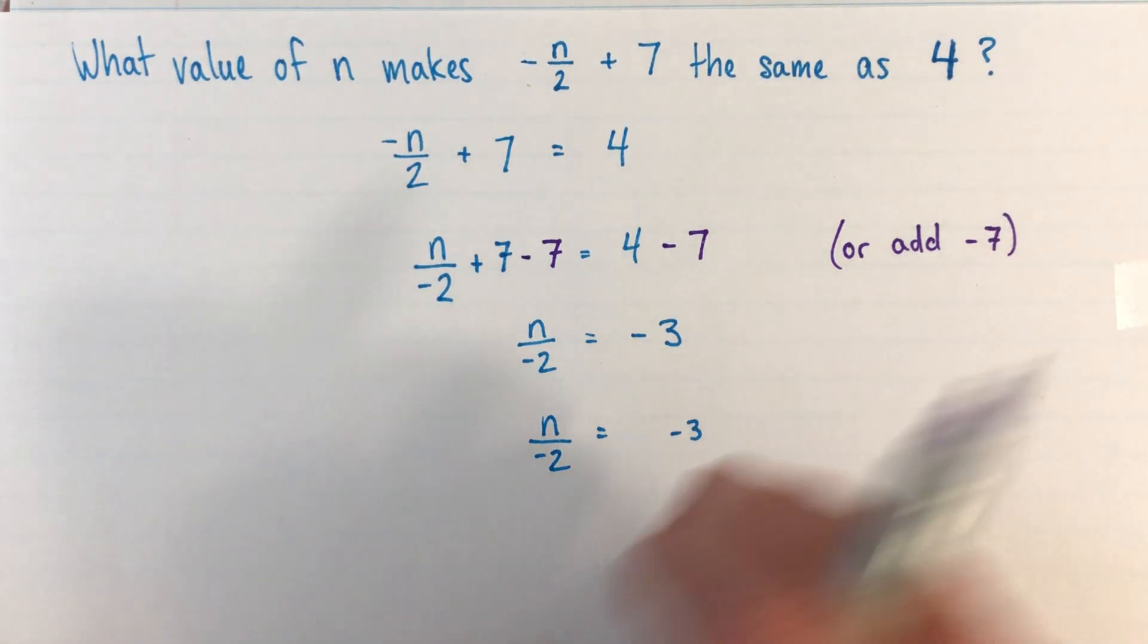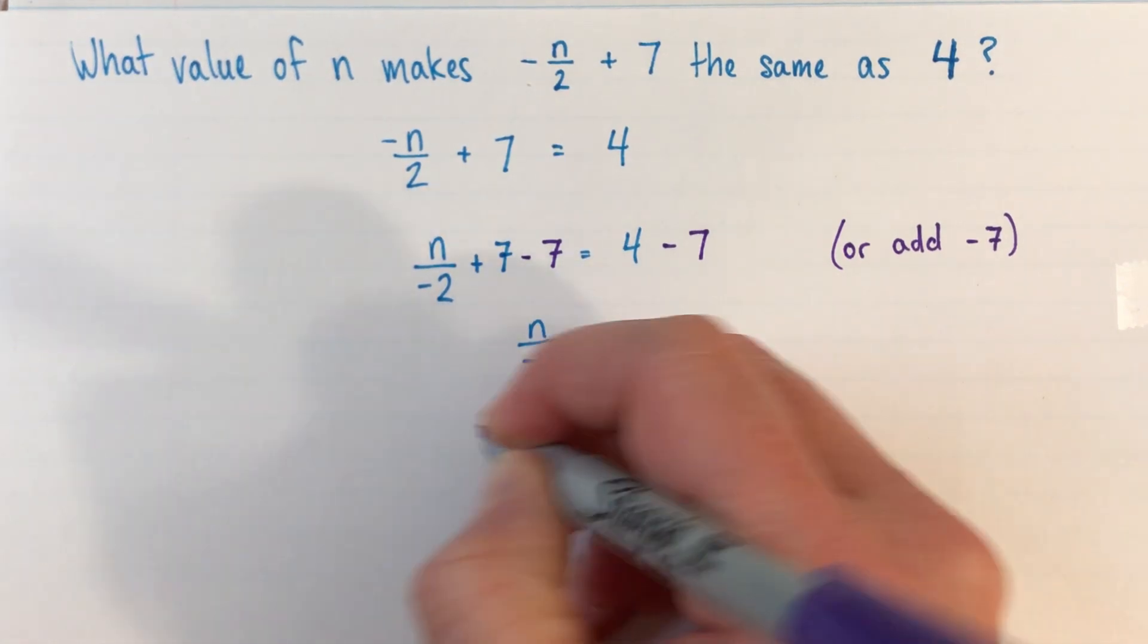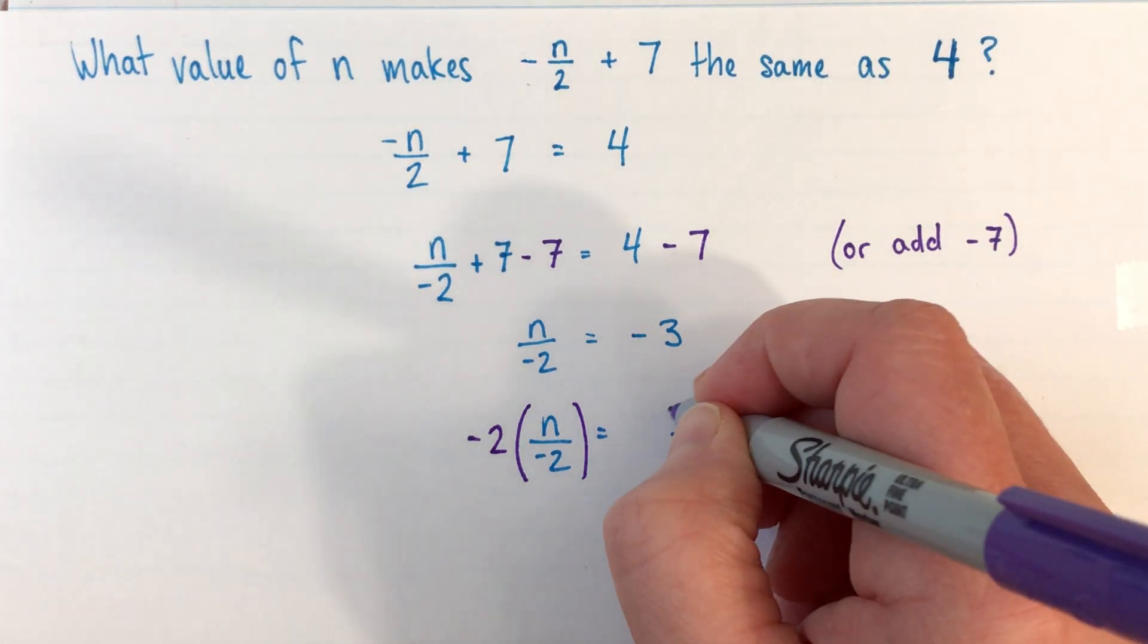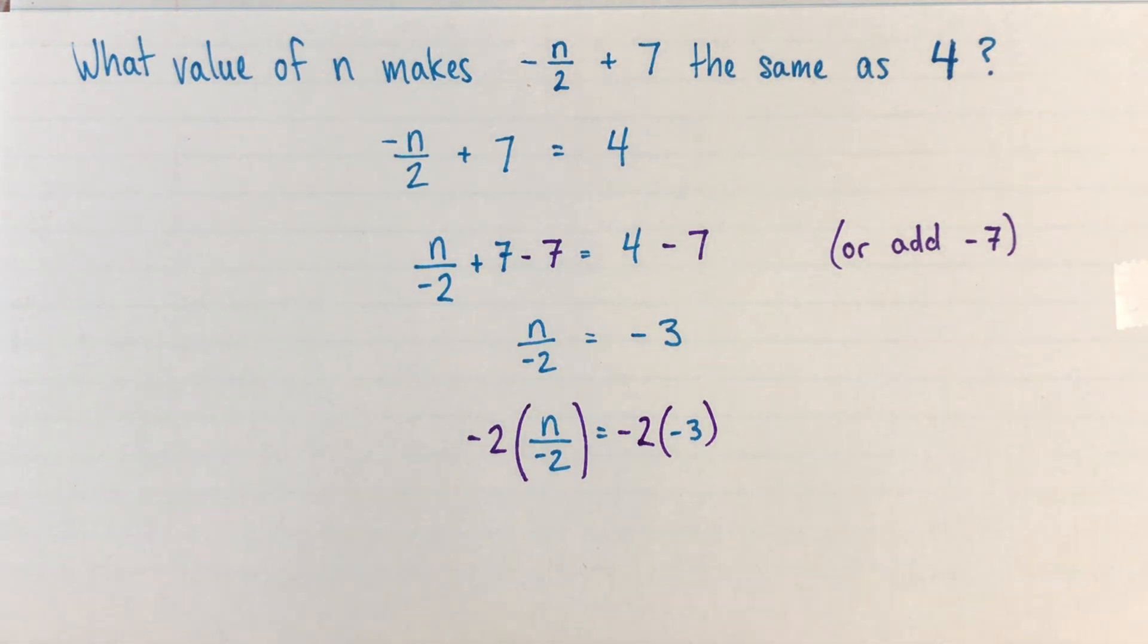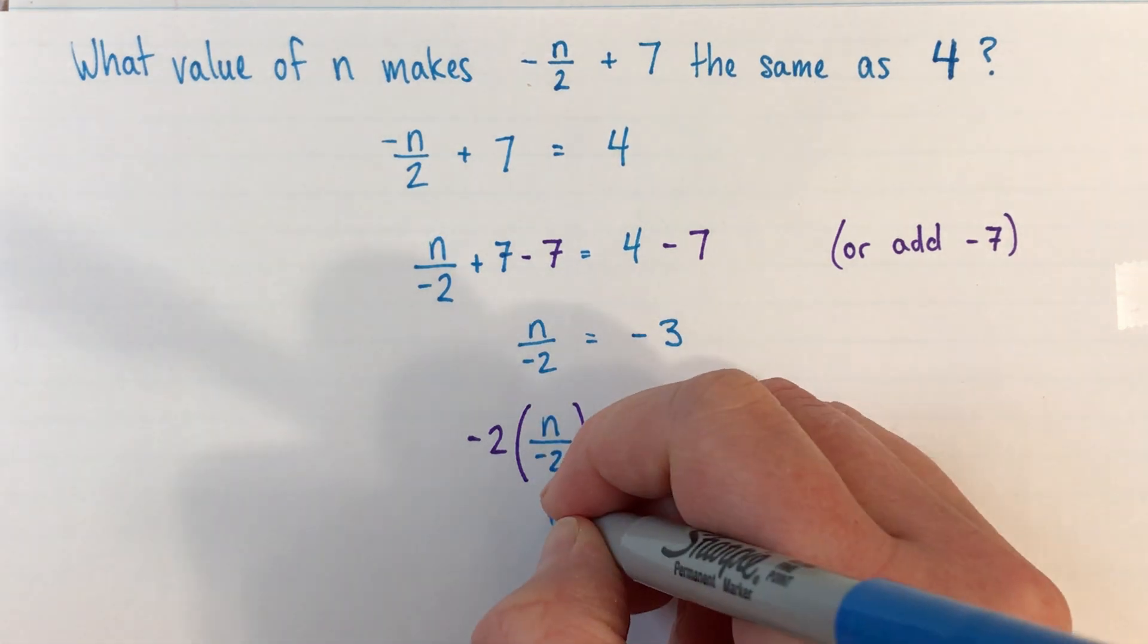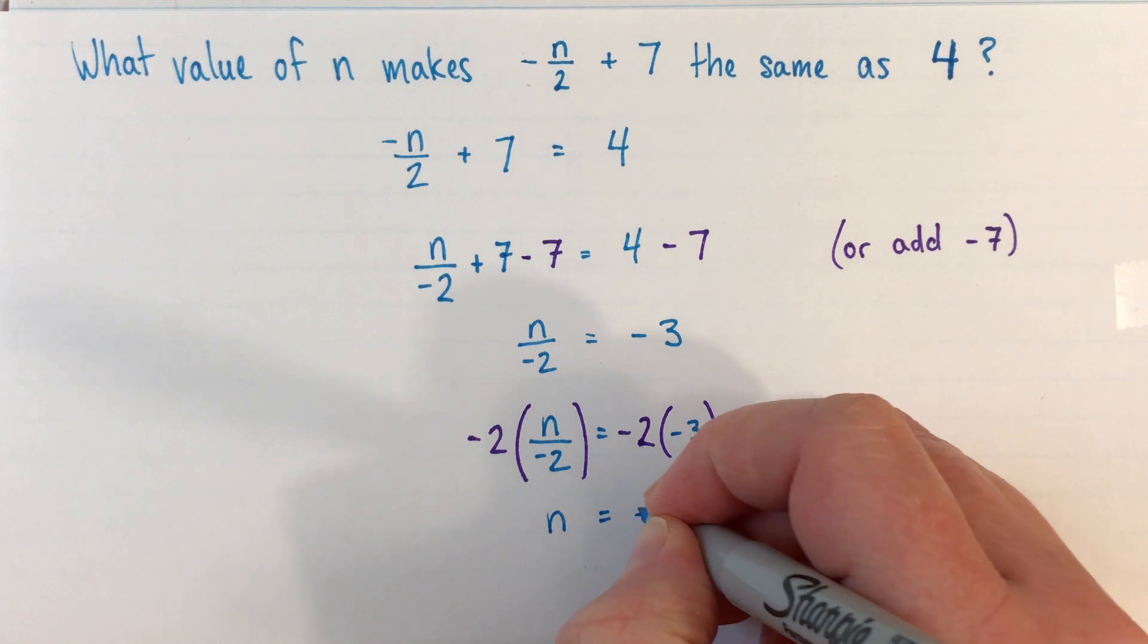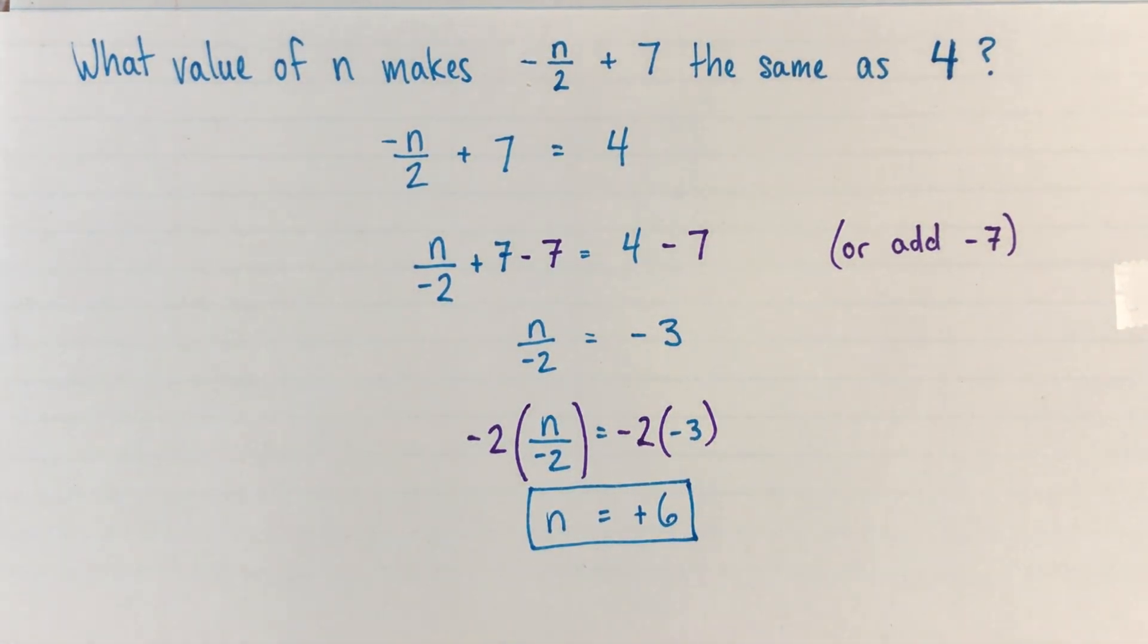And now I'm going to do the operation in my other color. So n divided by -2, I'm going to multiply by -2. And because I need to keep these two sides the same, I'm going to do the same on the right-hand side as well. So we copied, we did the same operation to both sides, and now we'll simplify. So n/(-2) times -2 is just n. And -2 times -3 is positive 6.